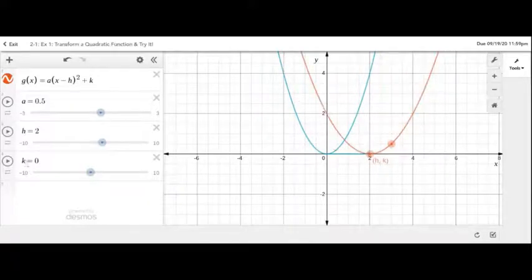k. The k value was positive 3, which means that the function will translate 3 units upwards. If it was negative, that means the function would translate 3 units downwards.